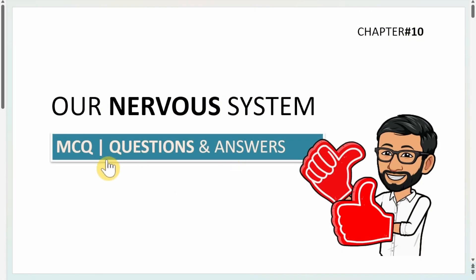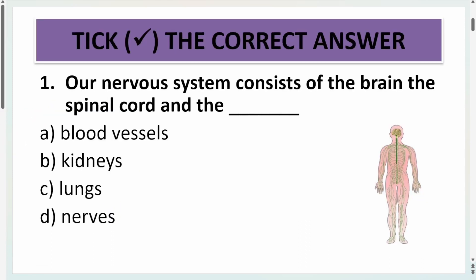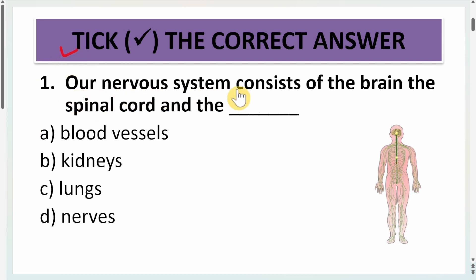Good morning students. Today we are going to learn question and answers from the chapter 'Our Nervous System.' Let us immediately start with the first question, which is 'Tick the correct answer.' The question reads: our nervous system consists of the brain, the spinal cord and the dash.